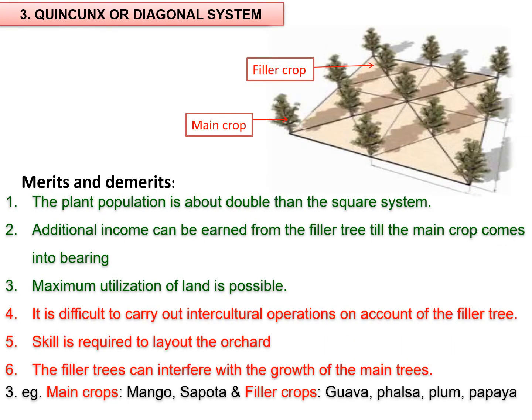The third important system is the quincunx system, which is also known as the diagonal system. In this system, the layout is as per the square system, with the addition of a tree in the center of each square. In this way, the plant population is almost double. However, the distance between the central tree and corner trees is much reduced, so the central plant is not permanent and is considered a filler plant. Filler trees serve as a source of additional income until the main trees come into bearing, and are usually short-lived and early bearing.